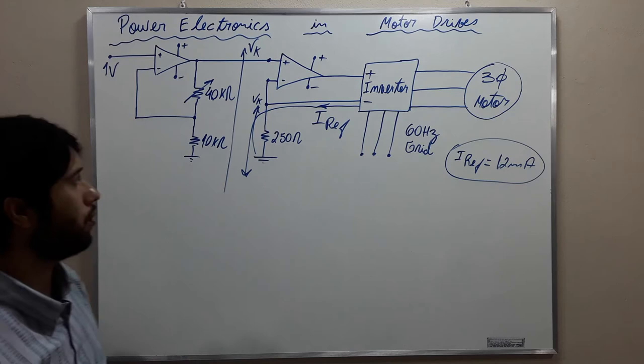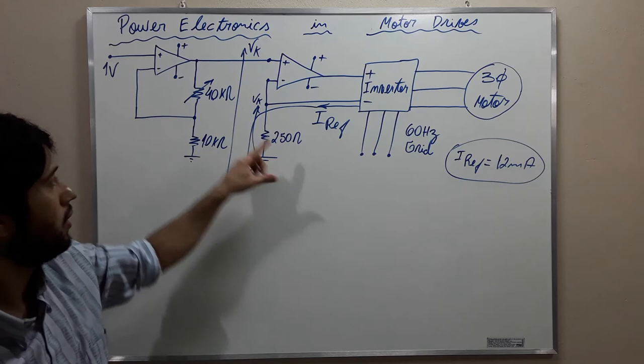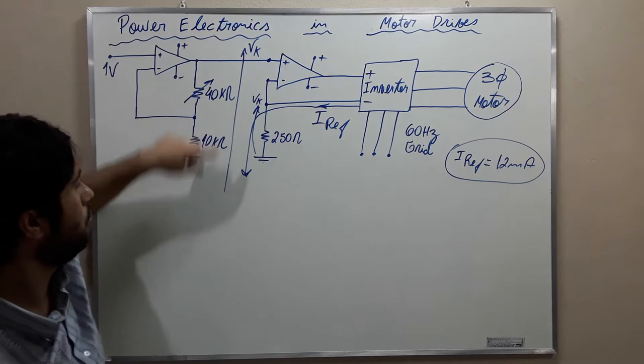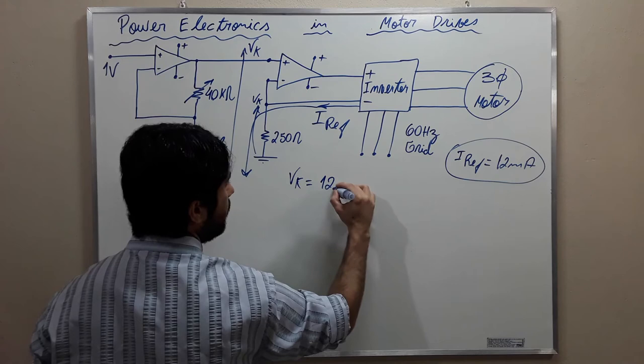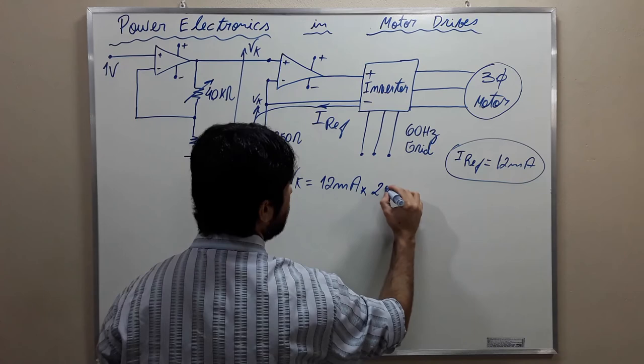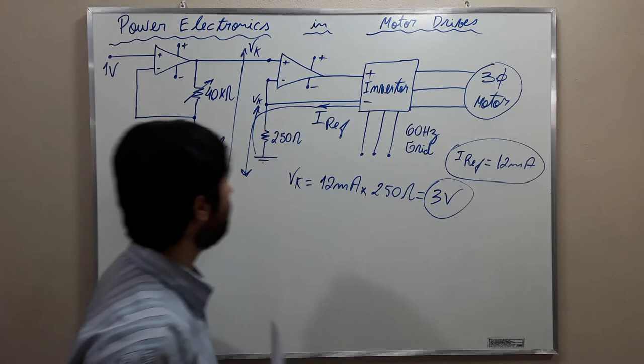One more time: in operational amplifier theory, there is a virtual short circuit between these two points. So we can infer that this voltage drop vk on top of this resistance is also on top of all this section here. Therefore, vk = 12 mA × 250 ohms = 3 volts.